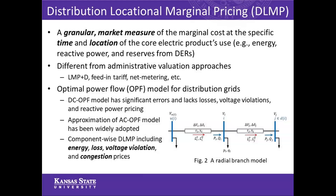The distribution market will require redesign and cost-causation pricing of those services. A natural research question is how to design a marginal cost-based pricing mechanism. Similar to the concept of LMP in the bulk transmission market, DLMP has been introduced in the distribution grid in recent years. DLMP is a granular market measure of the marginal cost at a specific time and location of three core electricity products: energy, reactive power, and reserves. DLMP is different from administrative distribution tariffs such as feed-in tariffs or net metering in that DLMP is based on the marginal cost and cost-causation principle.